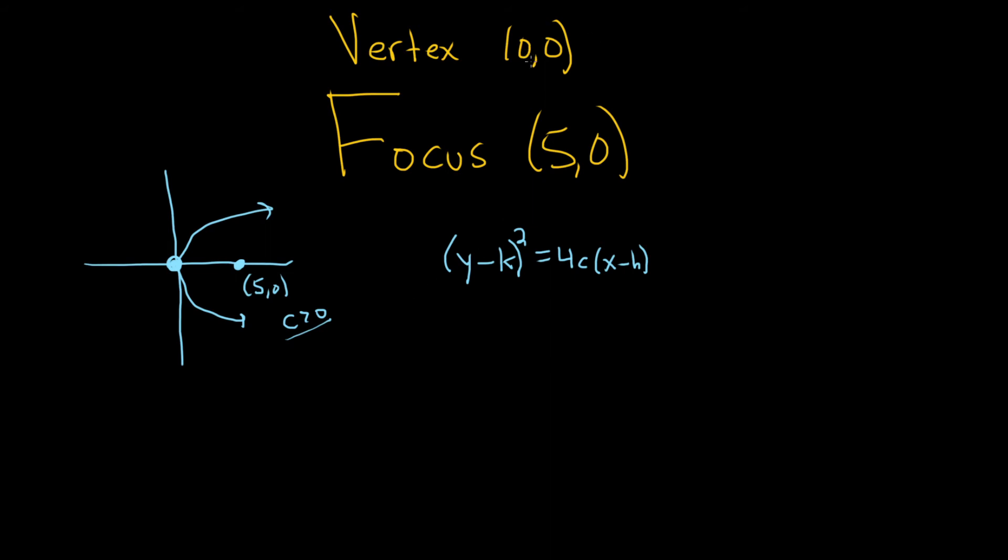Now we can plug in some stuff. So the vertex is (h, k), so this will be (y - 0)² = 4c(x - 0). So this is y² = 4cx.